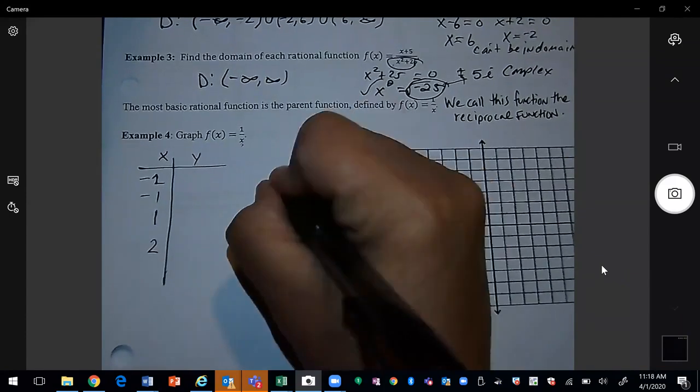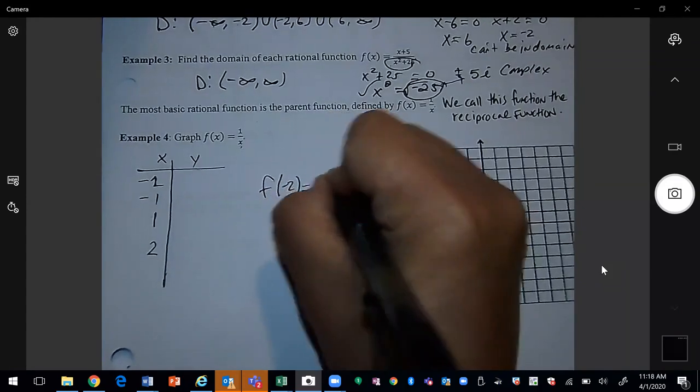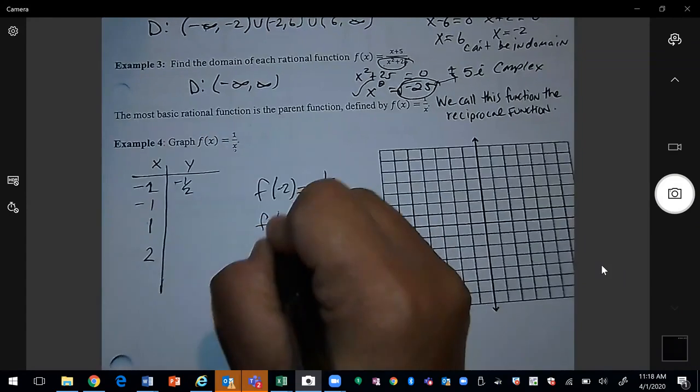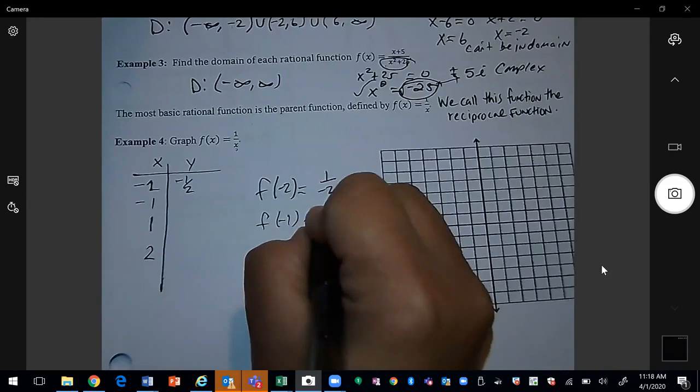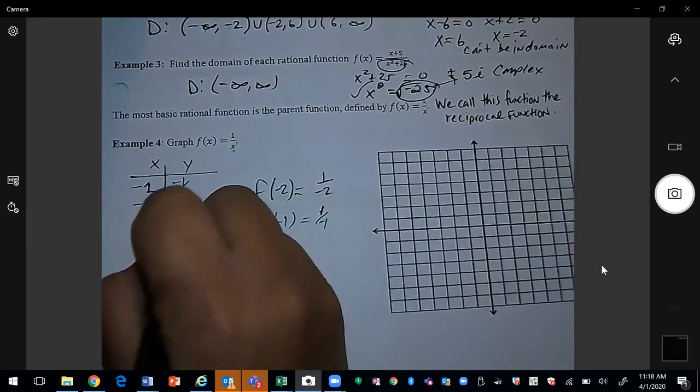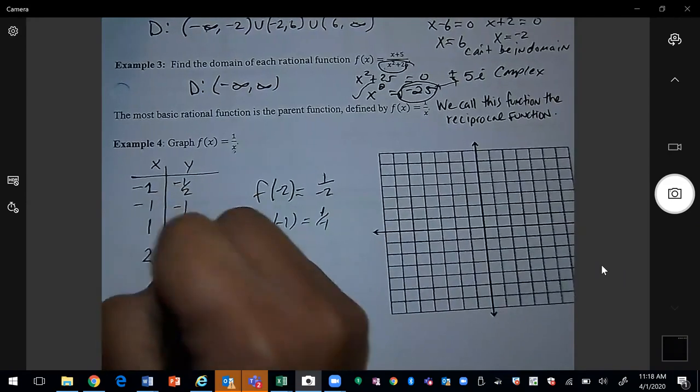And if I evaluate the function at negative two, I'm going to end up with negative a half. If I evaluate it for negative one, I end up with negative one. If I evaluate it for one, I get one. And for two, I get a half.